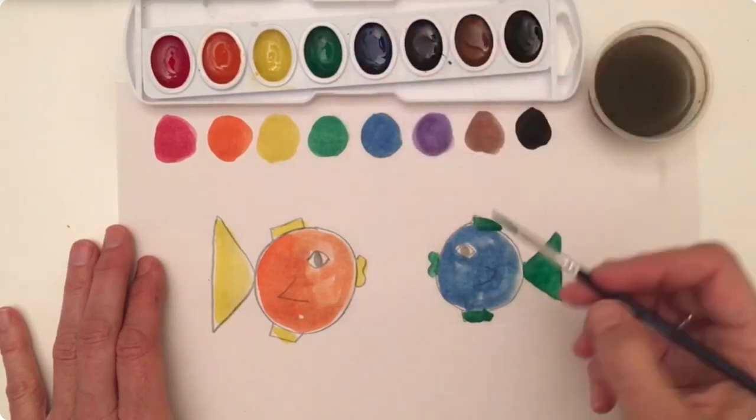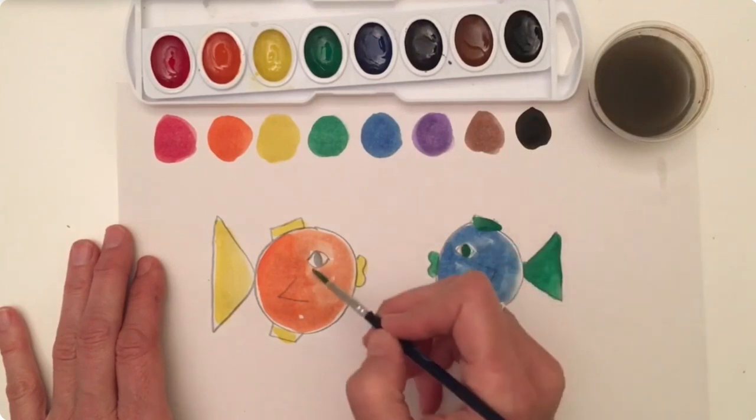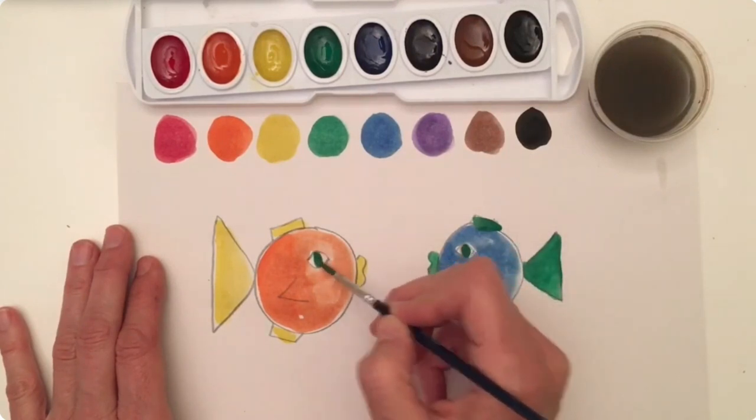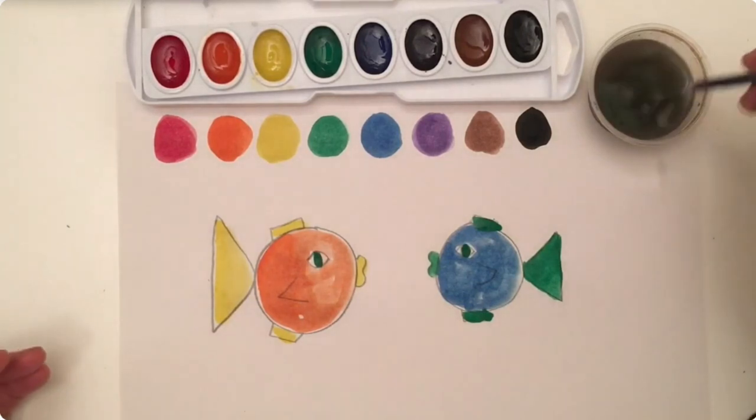Now, I think it would be nice to have a green eye on this one too. And I think I will give this friend a green eye as well. And look, we have two painted fish. That was fun.